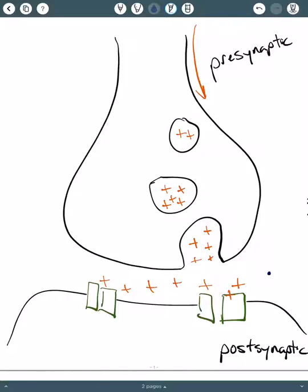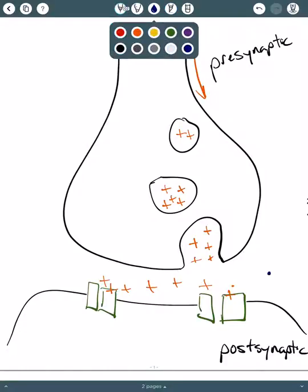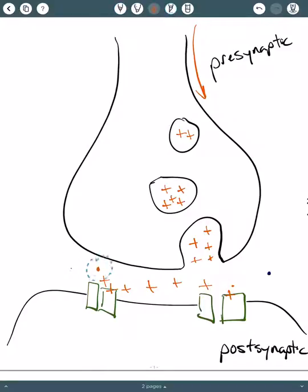What happens post-synaptically depends on the neurotransmitter and the receptor that's expressed. If this transmitter is an inhibitory neurotransmitter, then when it binds to its receptor, you might pass negatively charged ions into the cell post-synaptically, driving down the voltage and bringing it further away from an action potential.